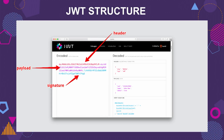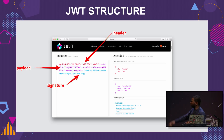Now let's look at the JWT structure. We have the header, we have the payload, and we have the signature. It's very easy for us to verify what our JWTs look like on JWT.io. Let's continue.